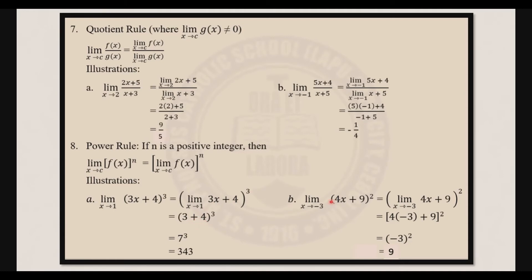Next: the limit of 4x plus 9 squared as x approaches negative 3 equals the limit of 4x plus 9 as x approaches negative 3, squared. Following the sum rule, we have 4 times negative 3 plus 9 squared. That gives us negative 3 squared, which is 9.